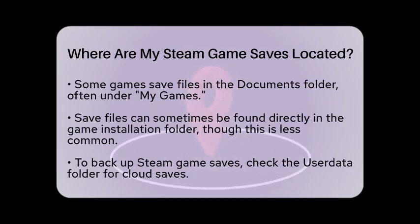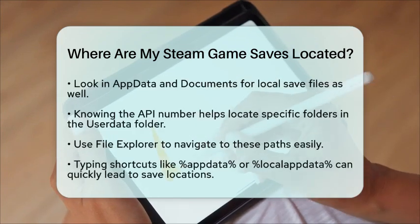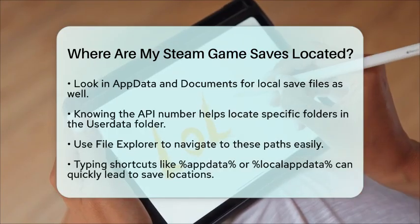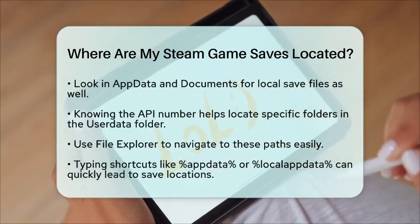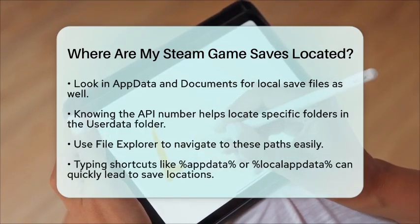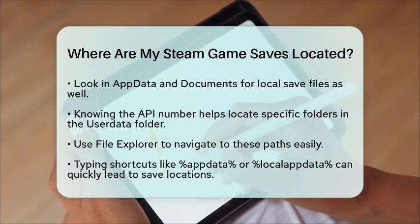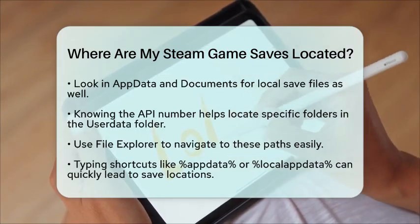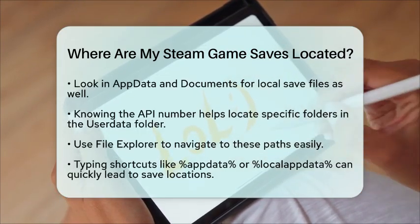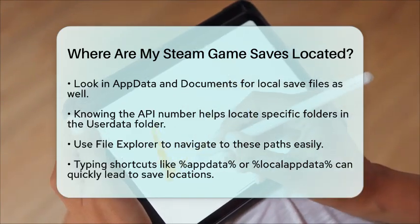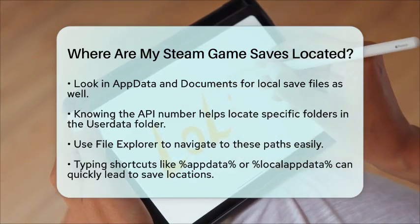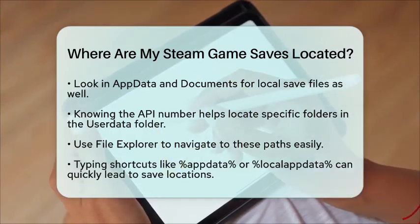If you want to back up your Steam game saves, start by checking the Steam User Data folder for cloud saves. Also, make sure to look in the AppData and Documents folders for local save files. Knowing the application ID number of the game can help you locate the specific folder inside the User Data folder. If you want to manually back up or transfer your saves, copying these folders is usually all you need to do. Using File Explorer to navigate to these paths can be very helpful.